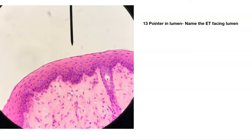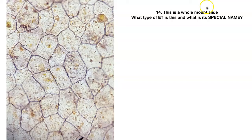Number fourteen — here's that whole-mount slide again. What type of epithelial tissue is this and what's its special name? The type is simple squamous — you're looking down at this plate of cells, here's the cell border. What's its special name? Mesothelium.